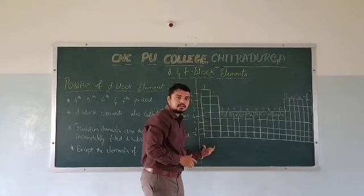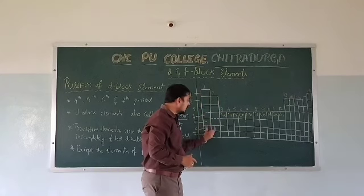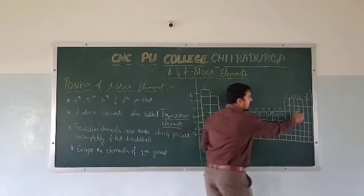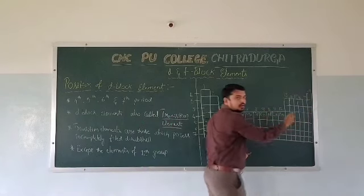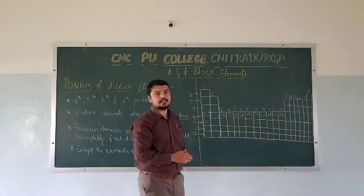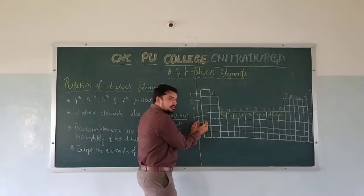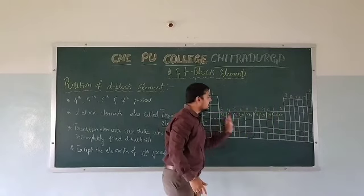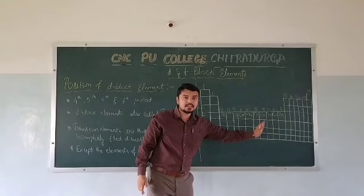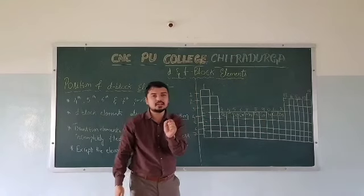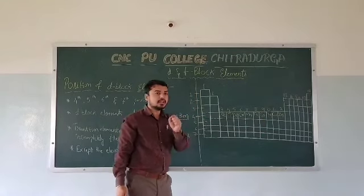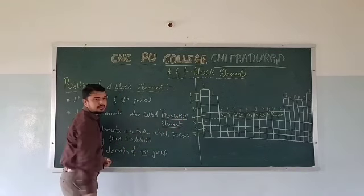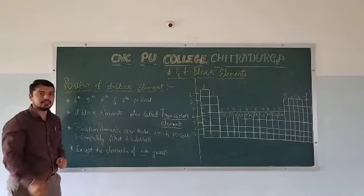S-block contains metals — alkali metals and alkaline earth metals. P-block contains mainly non-metals, including noble gases like helium, neon, and all other noble gases. So a transition is taking place from metals to non-metals. That's why D-block elements are also called transition elements.